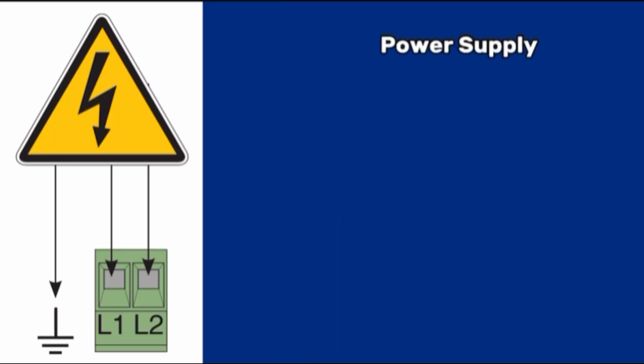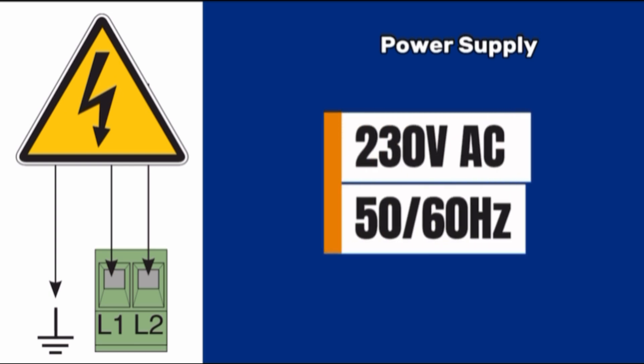Power supply. Terminals L1 and L2 is the main power supply to operate the control board. The main 230 volt AC 50 60 hertz.